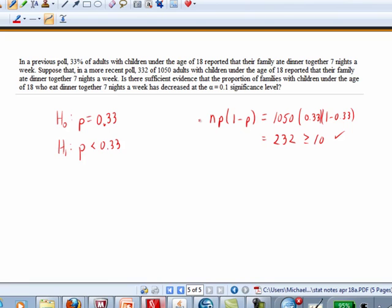Now I need my independence requirement to be satisfied. I need the sample size to be no more than 5% of the population size. We surveyed 1,050 adults with children under the age of 18. I'm certain that there's at least 10 million of those types floating around the country. And 5% of 10 million is 500,000. So, 500,000 is certainly bigger than the 1,050. We're good to go on the independence requirement as well.